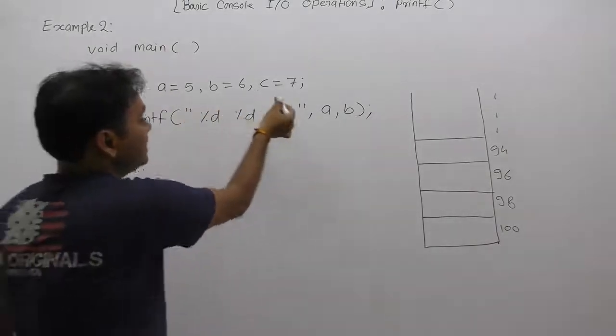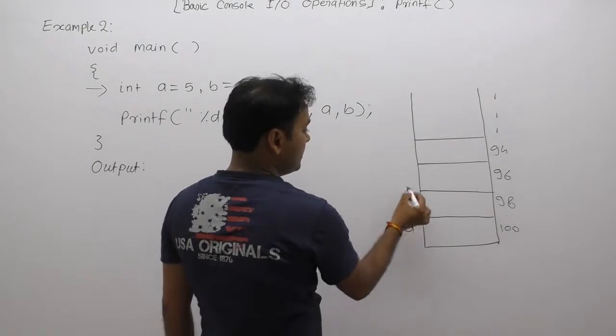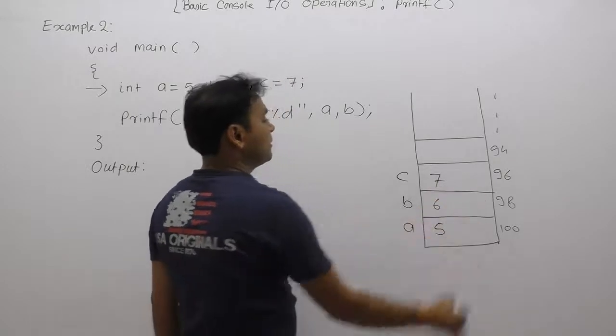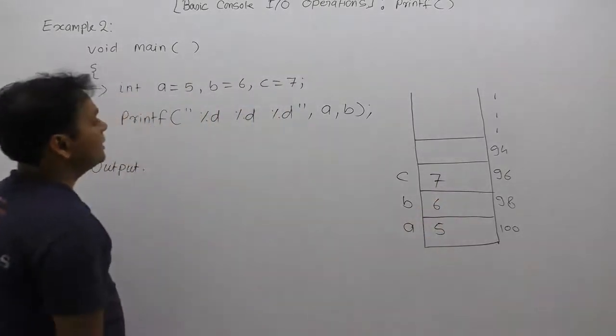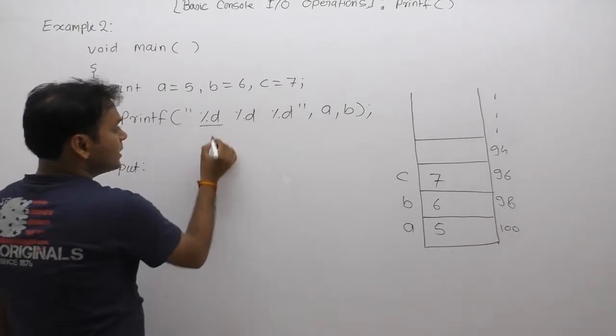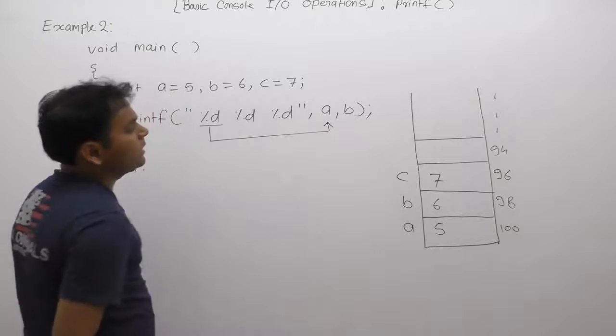Variables a, b, c. In the form of a stack diagram: a, b, c with values 5, 6, 7. Next, in place of the first %d, we are replacing with the value of the next corresponding argument, a.